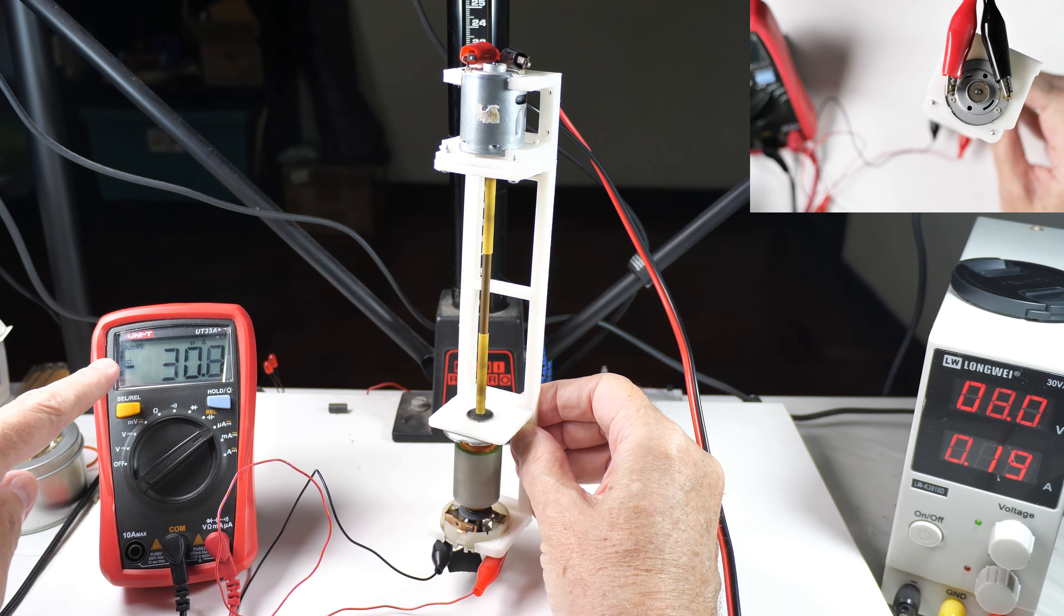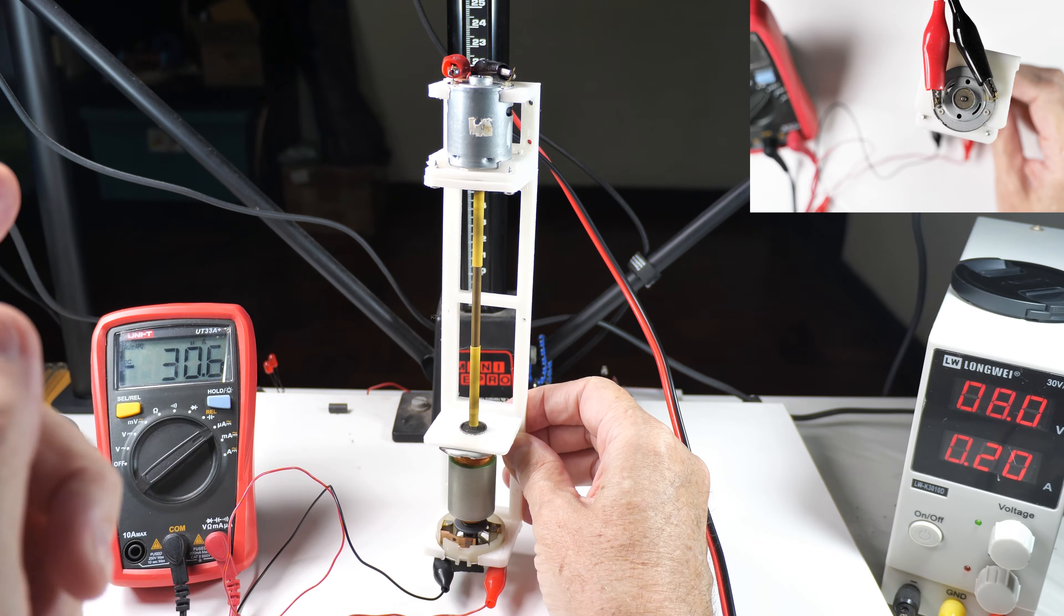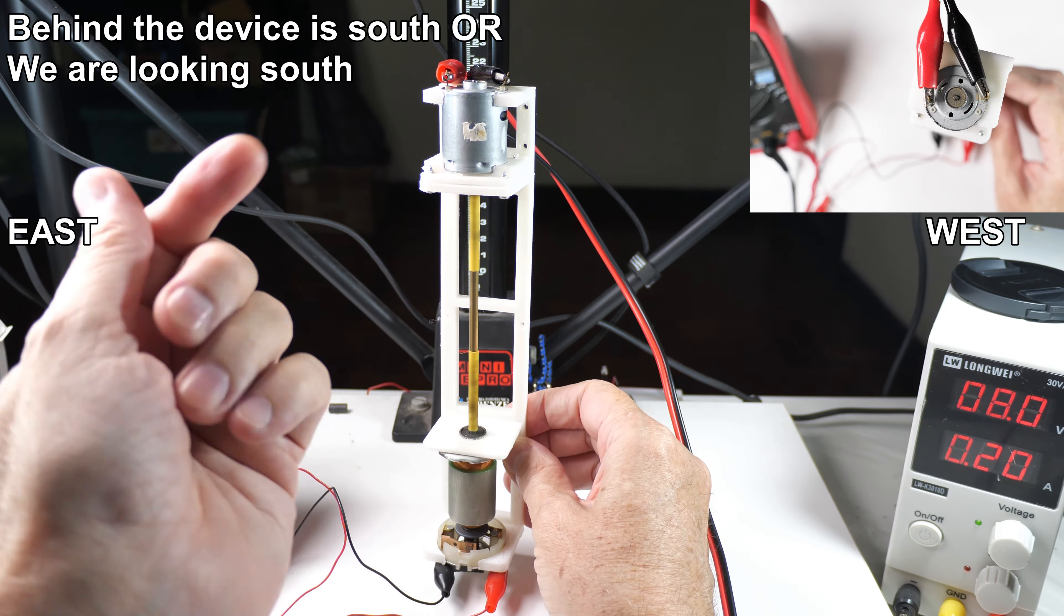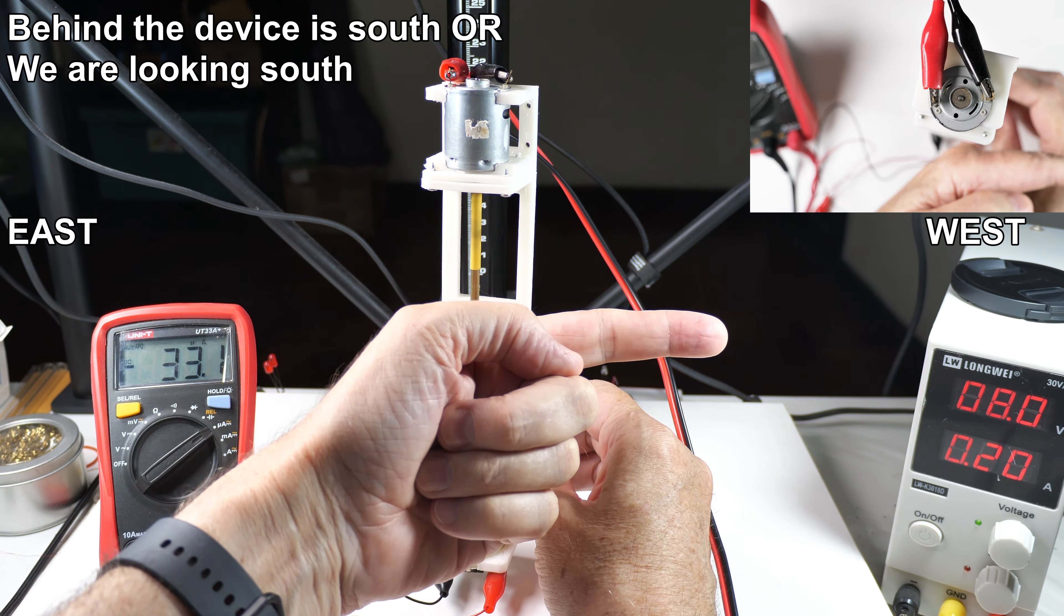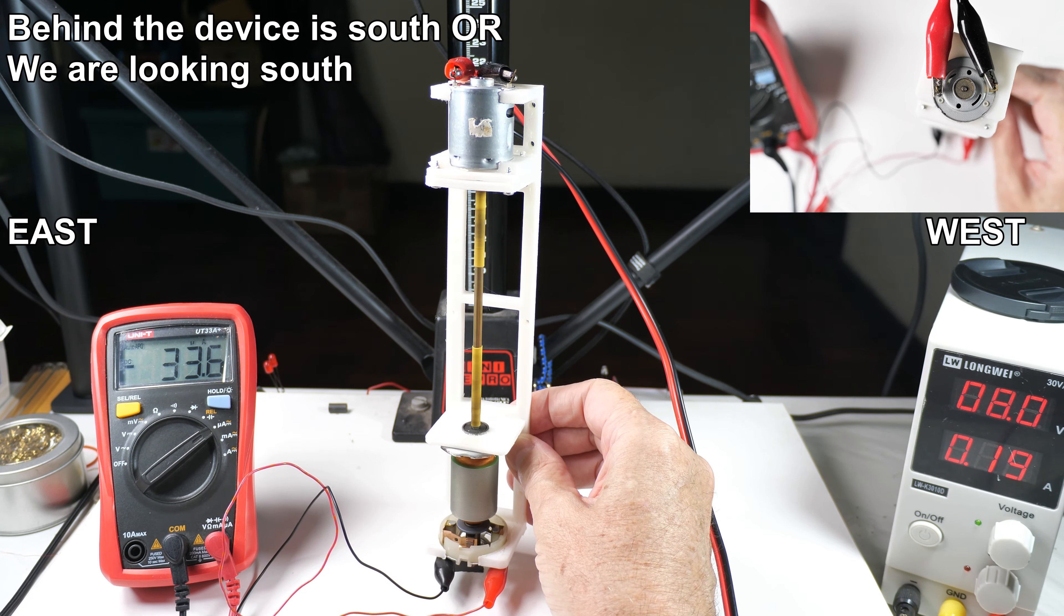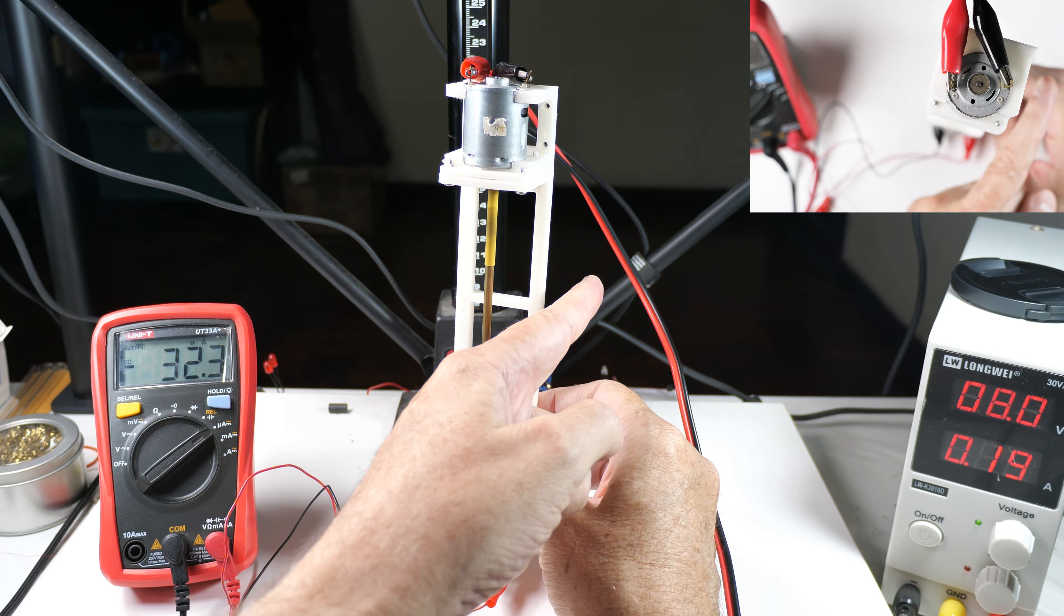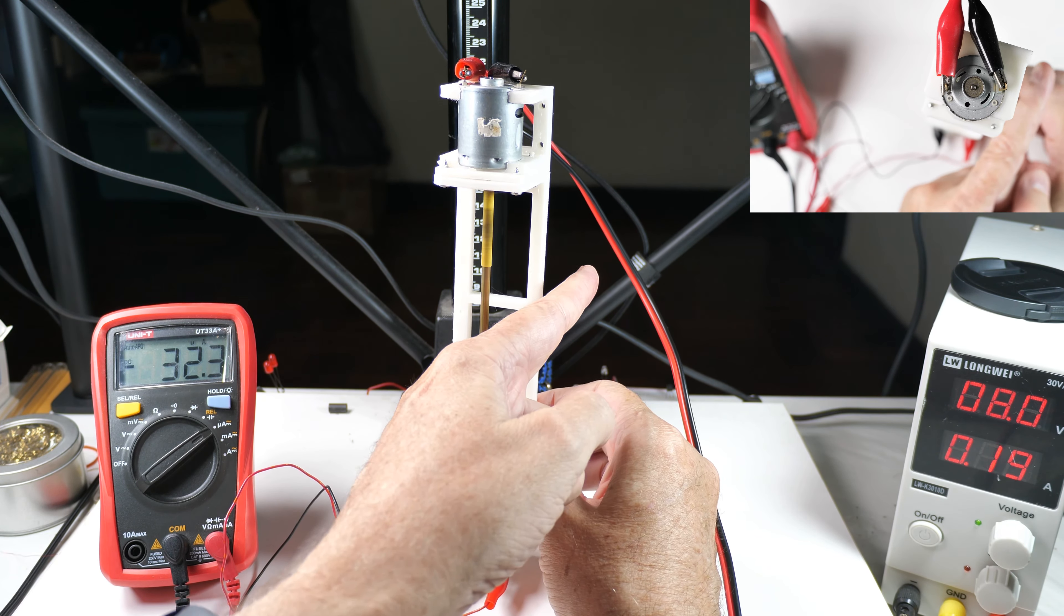And as we look here, we've got minus, what are we going to call that, 30, 31, something like that. So behind us is south. That way is east. That way is west. And then back towards the camera, that is north. However, the house is not built squarely north-south. So it's actually tipped that way. So that would be south.